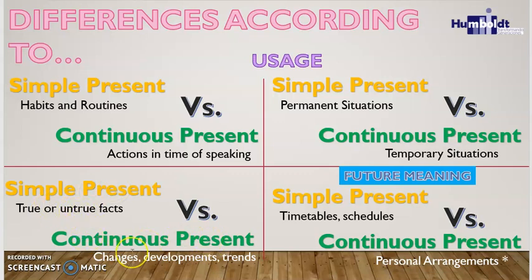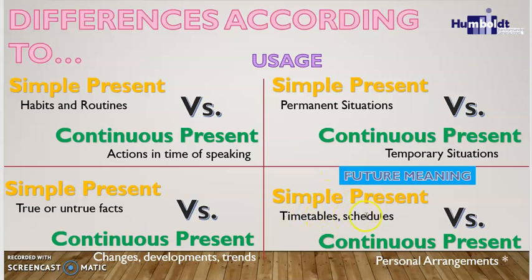Also, the simple present is for true facts, but the continuous present is for changes, developments, or trends. We can also use both tenses in a future way. For the simple present used as future, the only usage is for timetables and schedules, while the continuous present used as future is for personal arrangements.